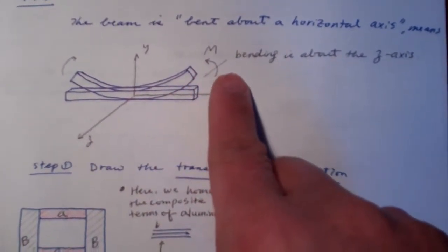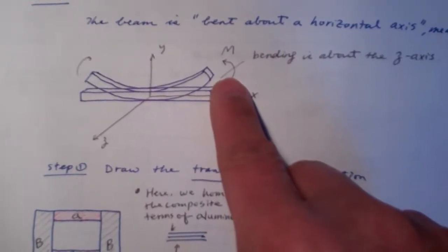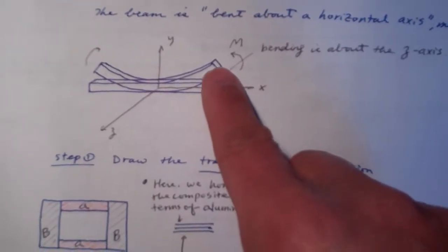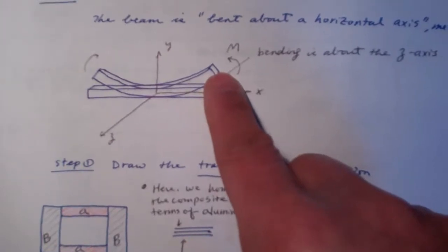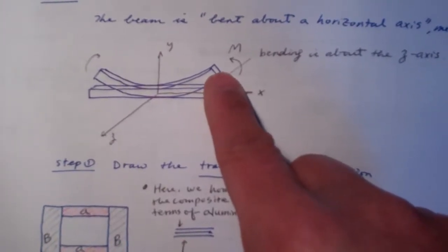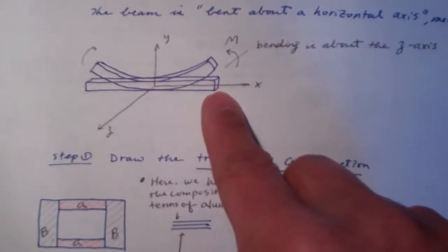So if we apply the bending about the z-axis, then basically the moment will bend the beam to curve up, for example, like this. And of course, we can apply the moment to bend the beam down, to curve down.